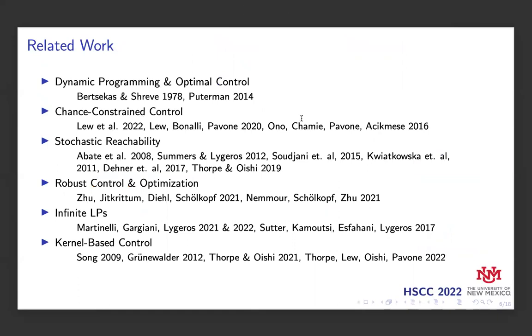Data-driven techniques have been investigated previously for stochastic optimal control and reachability, and typically these techniques rely upon neural networks, Gaussian processes, and Koopman operators. Related work originally comes from dynamic programming and optimal control, and has been extended to include chance-constrained optimization, stochastic reachability, and robust optimization. Notably, infinite LPs are related to our approach. Our approach is related to kernel embeddings of distributions, a non-parametric machine learning technique developed in Song 2009 and Grunewalder 2012, based on extensions to stochastic optimal control in some of our recent papers.